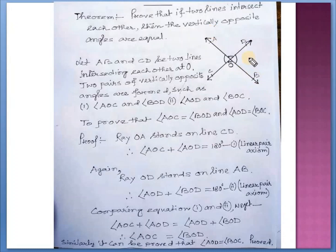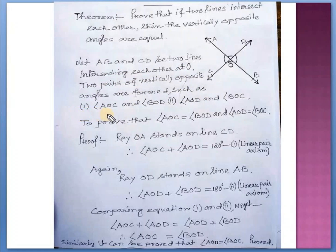A diagram is also given. These are the two rays AB and CD. Let AB and CD be two lines intersecting each other at O. The two pairs of vertically opposite angles formed are: number 1, angle AOC and angle BOD; and number 2, angle AOD and angle BOC.